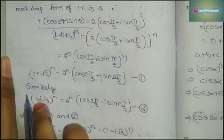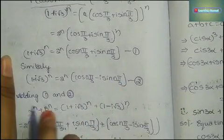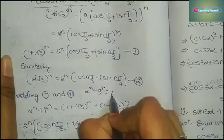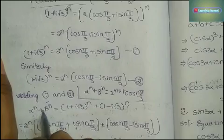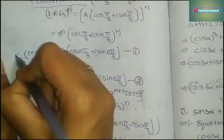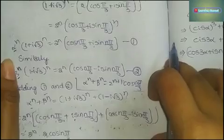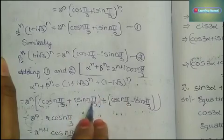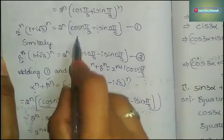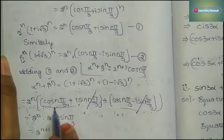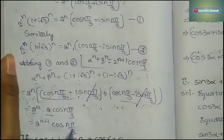Since α = 1+i√3 and β = 1−i√3, we compute α^n + β^n by adding equations 1 and 2. Taking 2^n common, the i·sin terms cancel, giving 2^n × 2cos(nπ/3). Since 2^n × 2 = 2^(n+1), we get 2^(n+1) cos(nπ/3). So LHS = RHS.